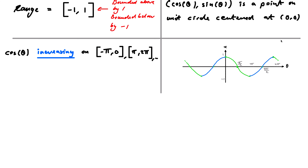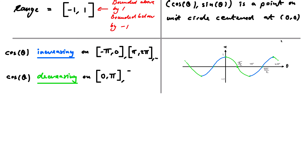Similarly, cosine of theta is decreasing from zero to pi, then from two pi to three pi if we're going in the positive direction, and so on. Again, you take this decreasing piece and move it by two pi in either direction to get every possible decreasing interval.